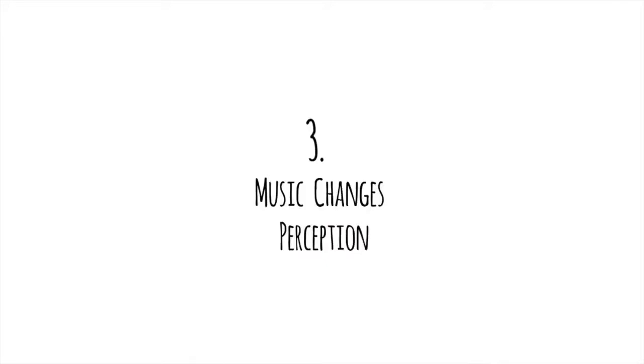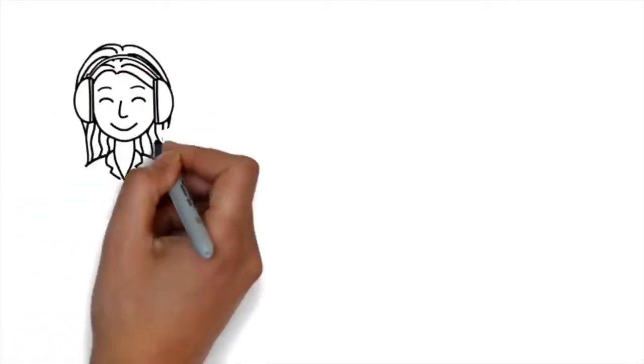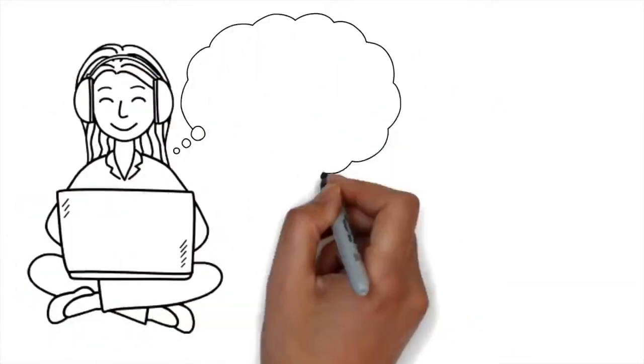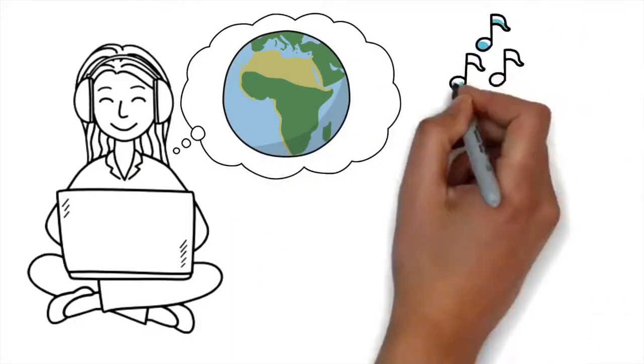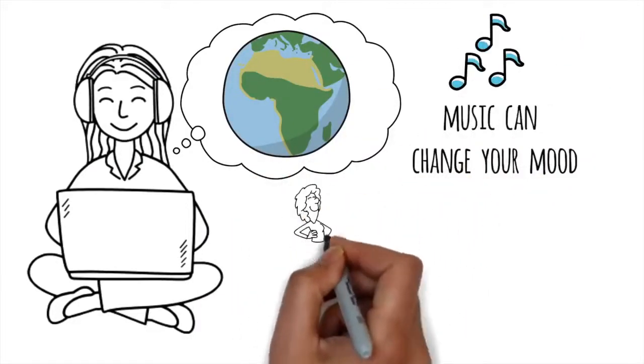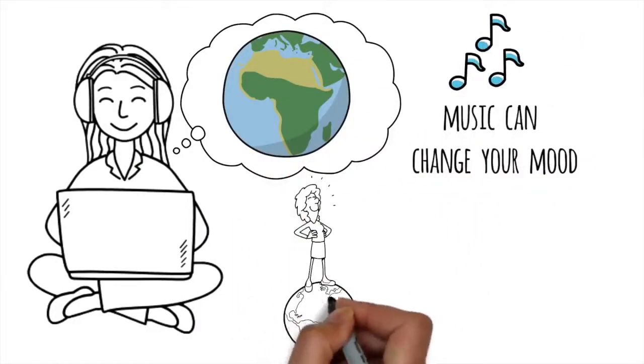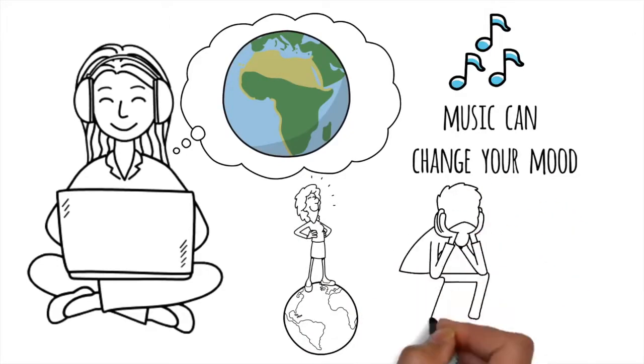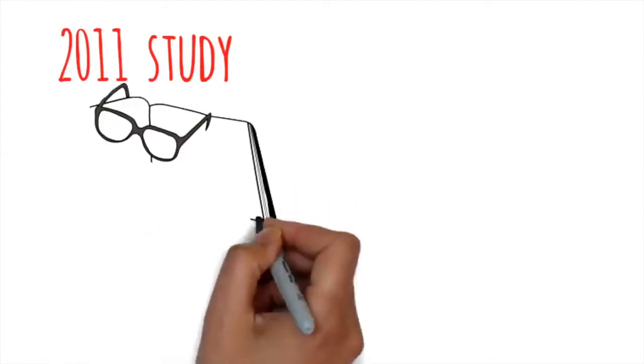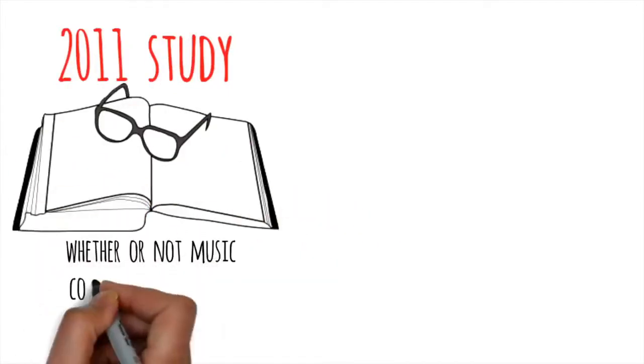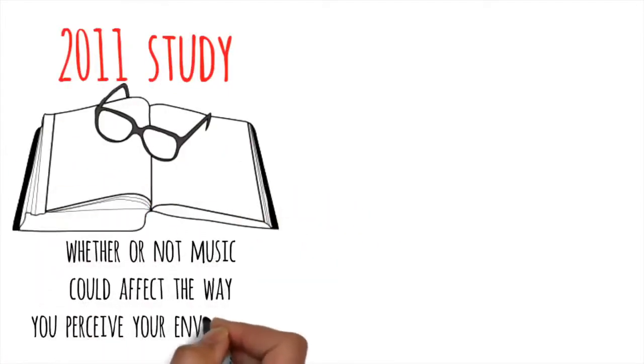Music Changes Perception. The type of music you listen to actually affects how you view the world around you. We all know that music can change your mood. An upbeat song can leave you feeling on top of the world, while a sad one can send you into a downward spiral. But that's not all. A 2011 study looked at whether or not music could affect the way you perceive your environment.